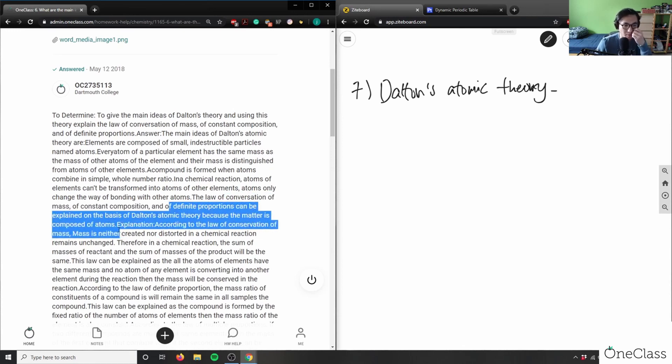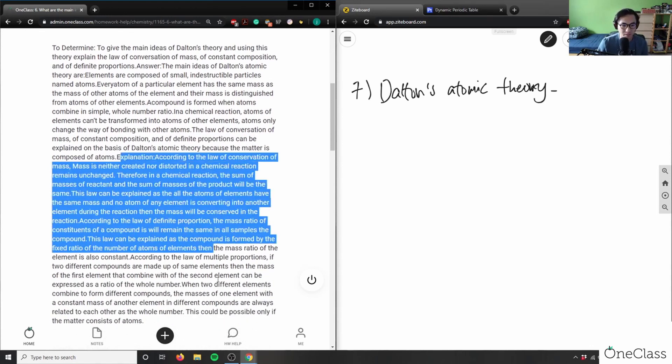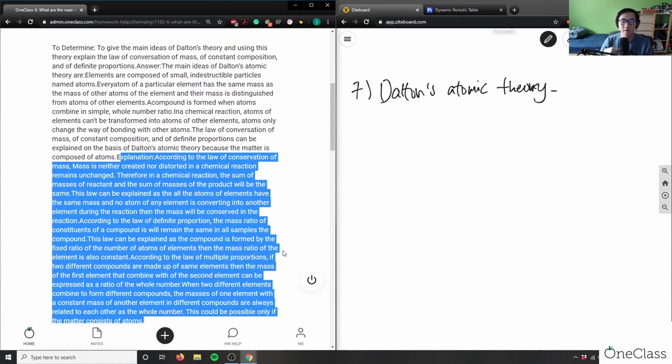According to the law of conservation of mass, mass is neither created nor destroyed in a chemical reaction, it remains unchanged. Therefore, the sum of mass of reactants and sum of masses of the products will be the same, good.